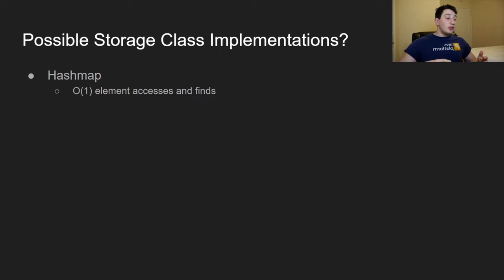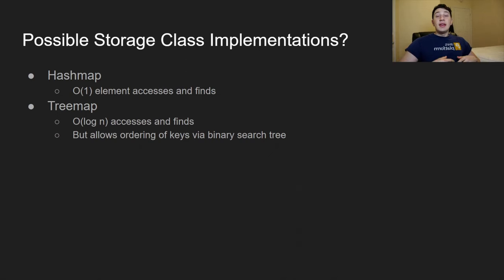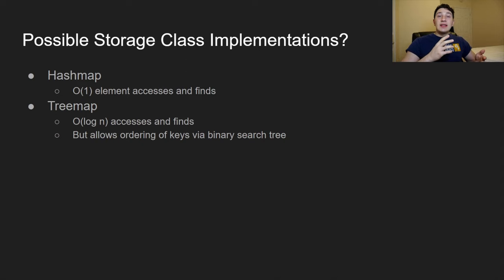Moving on to storage class implementations. The first and obvious one is the HashMap — very simplistic, with O(1) time complexity for accesses, finds, puts, deletes, and gets. Another option is a TreeMap, which is essentially a binary search tree. In addition to storing key-value pairs, it provides logarithmic complexity for inserts and deletes, and it allows you to quickly get an ordering over all the keys via tree traversal.